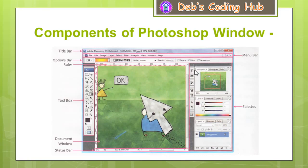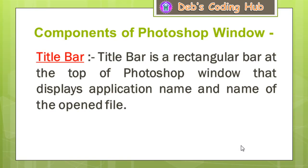On the right side of the window we have the palette walls. Here, three palettes are displayed in the palette wall. Now let us discuss the components of the Photoshop window one by one. The first one is the title bar. As I have already said, the title bar is a rectangular bar at the top of the Photoshop window that displays the application name and the name of the open file.